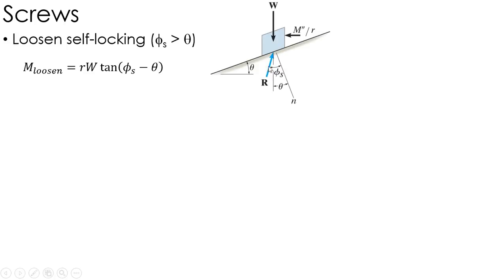Again, I have that R vector, which is the normal plus the friction, I have to overcome that to get that thing to unscrew, because my friction is bigger than my lead.